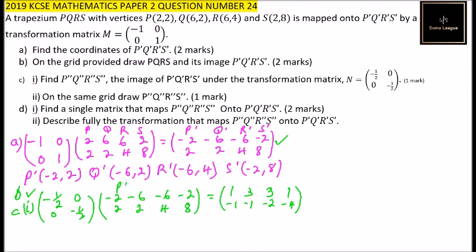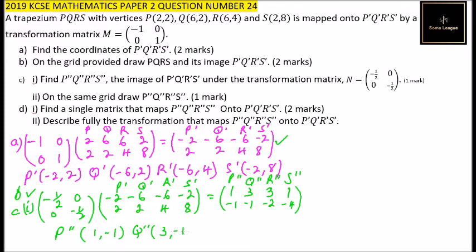So the coordinates of the double prime image are: P'' = (1, -1), Q'' = (3, -1), R'' = (3, -2), and S'' = (1, -4). Those are the coordinates of P''Q''R''S''.